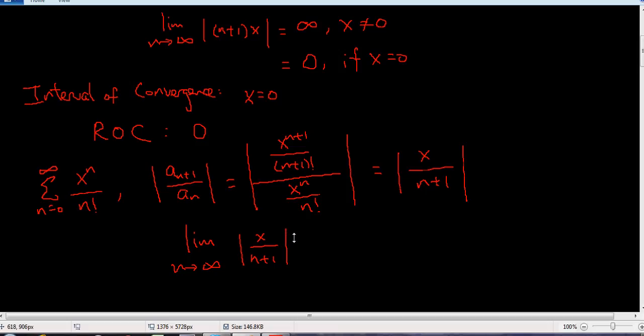So let's say x is negative 5, x is a billion, it doesn't matter what it is, this is still going to go to 0. So no matter what x is, it still converges because 0 is less than 1. Remember that's the ratio test. As long as this limit is less than 1, then your series converges.